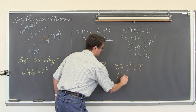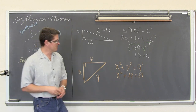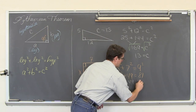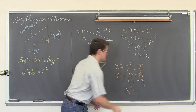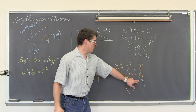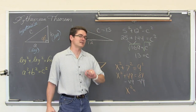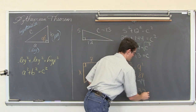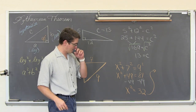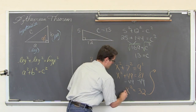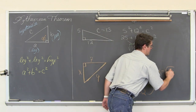This is x squared plus 49 equals 81. We are going to subtract both sides by 49. We get x squared is equal to 81 minus 49. 81 minus 40 is 41, and 41 minus 9 is 32. We are going to square root both sides of the equation and get x is equal to the square root of 32.